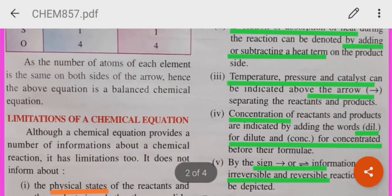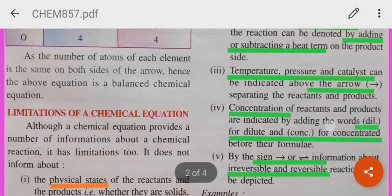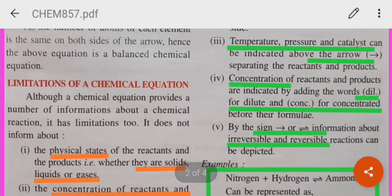Then, temperature, pressure and catalyst can be indicated above the arrow. Concentration of reactants and products are indicated by adding the words. Shortcode for dilute is DIL. Shortcode for concentrated is CONC.